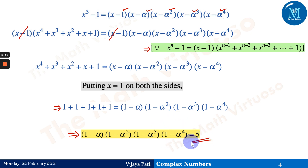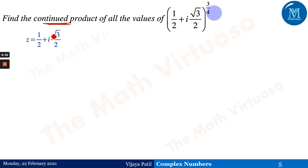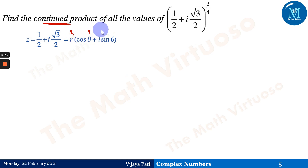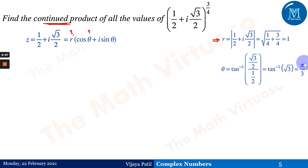Let us now go for the continued product type of question. Find the continued product of all values of (1/2 + i√3/2)^(3/4). This z = 1/2 + i√3/2 = r(cos θ + i sin θ). The modulus r = √(1/4 + 3/4) = 1. The argument θ = tan⁻¹(√3/2 ÷ 1/2) = tan⁻¹(√3) = π/3.